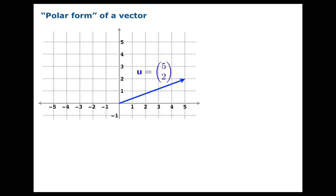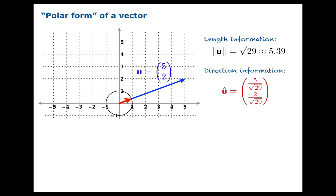Let's get more mileage out of this example and see why it's almost polar. We've got the length information, which is encoded in the norm. So we know that the length of this vector is about 5.39. And the direction information is obviously encoded in the normalization of u. It's pointing in the direction of u.